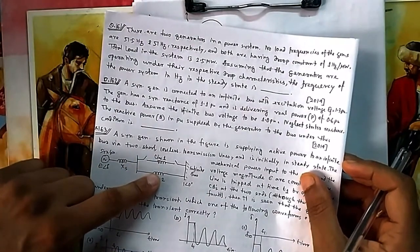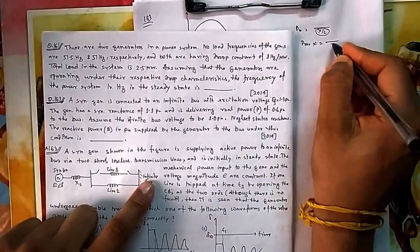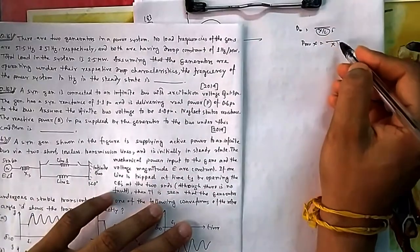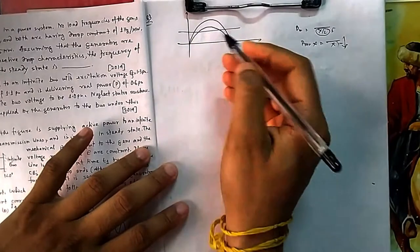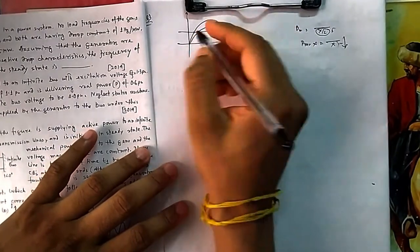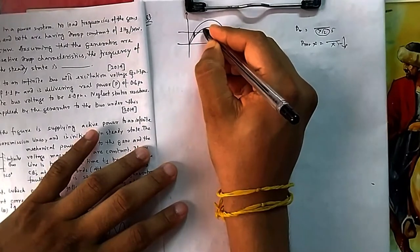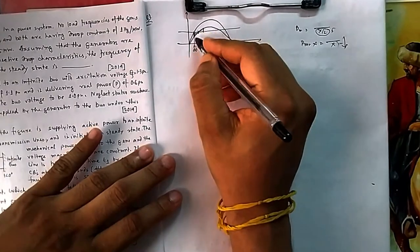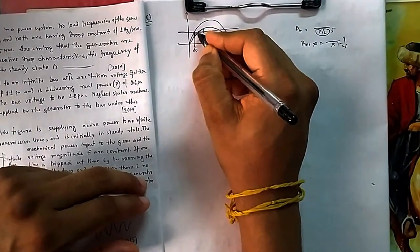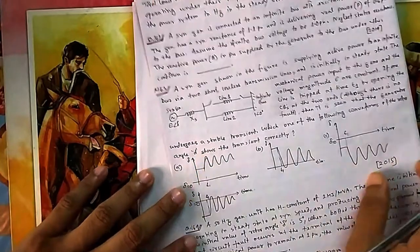With two lines the reactance was X/2; after tripping one line it becomes X. The maximum power P_max = E·V/X decreases because we divide by a larger X. The new power-angle curve is lower. The operating point shifts, and since mechanical power now exceeds electrical power, δ initially increases. After the initial swing it oscillates and settles. Therefore the initial swing of δ is an increase after t1 — option A is correct.